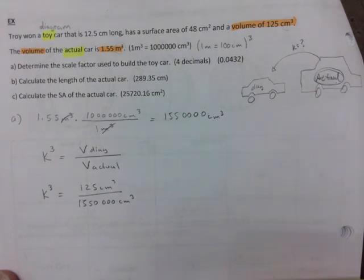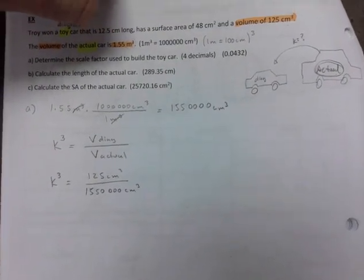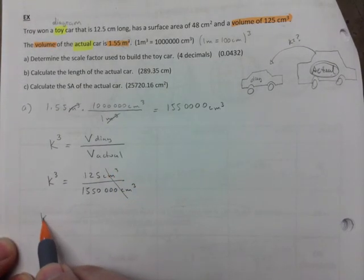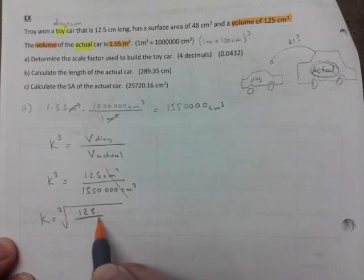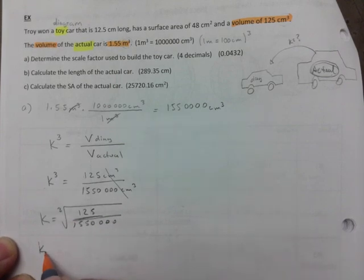That's my first step, and the units cancel out just nicely there. And I need to take the cube root - cube root of 125 over 1,550,000.